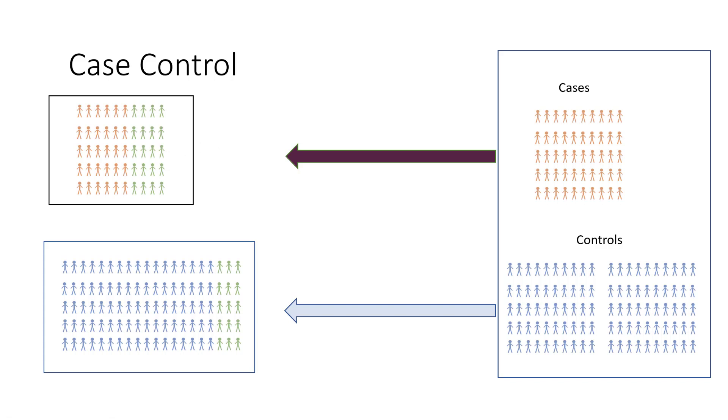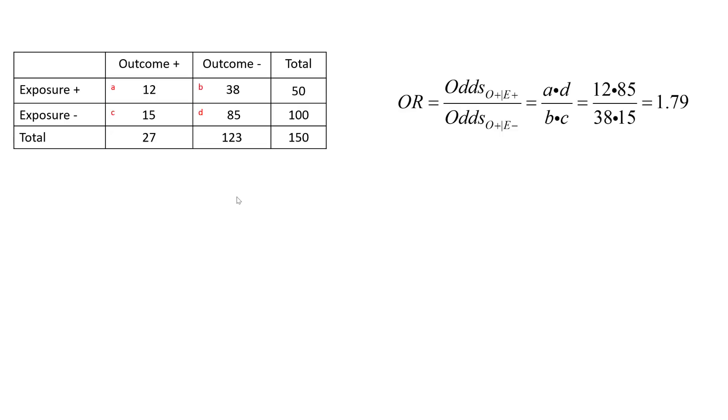But we can still use the odds ratio to approximate the relative risk. And here's why. We've taken the numbers from the previous example and put them into a standard two-by-two table.